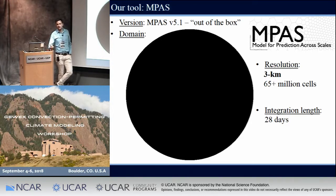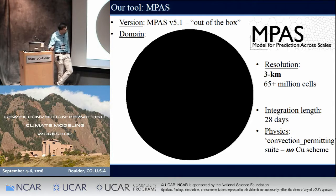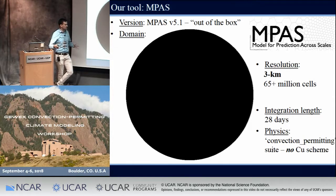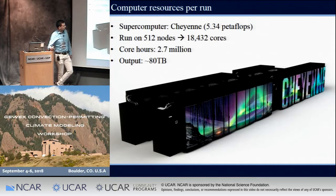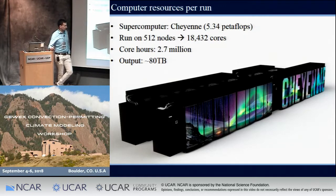We're integrating our simulations for 28 days. We're using the convection-permitting suite — that's a nice thing about MPAS, it comes packaged with these suites — except we are omitting the Grell-Freitas convection scheme; we're going with no cumulus scheme in our runs. Each of these runs takes about 2.7 million core hours on Cheyenne and produces about 80 terabytes of output, so it takes a little while to get these done. We're still in the process of running a fourth one.